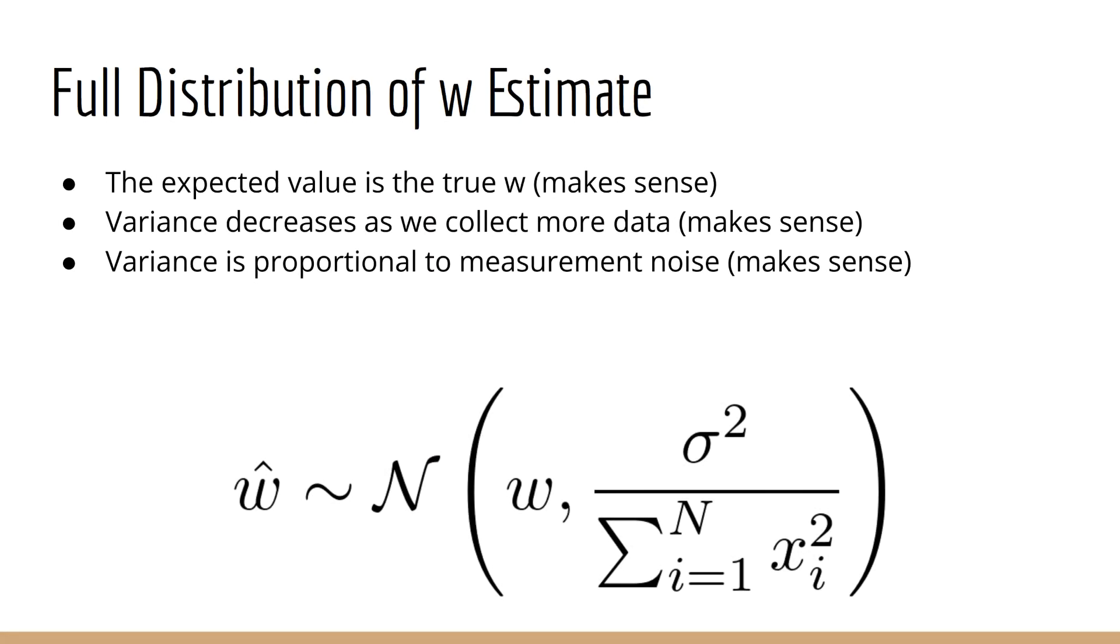Now let's think about why this result makes sense. The mean obviously makes sense. The expected value of w hat is w, which is good. But why is this the variance? One thing it suggests is that, as we collect more and more data, the sum of all the x sub i squared will increase, and therefore the variance of w hat will decrease. That makes perfect sense. As we collect more data, we become more confident in our estimate of w.